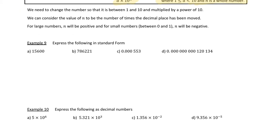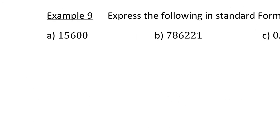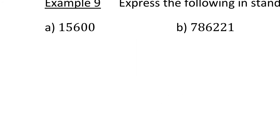We're going to look at how to do this by expressing the following numbers in standard form. The first one is 15,600. We want to make this a number between 1 and 10, so I'm going to write it as 1.56, and then think about what we need to multiply it by. The 1 would have been in the ten-thousands column and is now in the units column, so it needs to move 1, 2, 3, 4 places — meaning it needs to be times 10 to the power of 4.